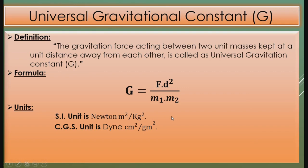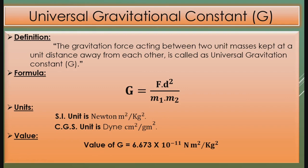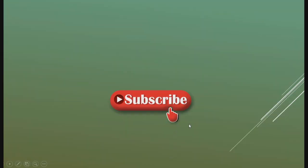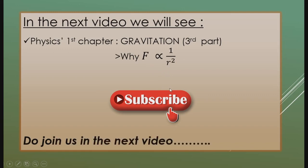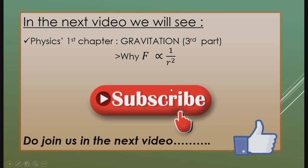The value of capital G — the universal gravitational constant — is 6.673 into 10 raised to minus 11 Newton meter squared per kilogram squared. If any of you have any doubt regarding the value of G, you can ask me by commenting in the comment section. In the next video, we have to see gravitation part three, which covers F inversely proportional to R squared. Before that, please subscribe to my channel, like, share, and comment, and do join us in the next video.